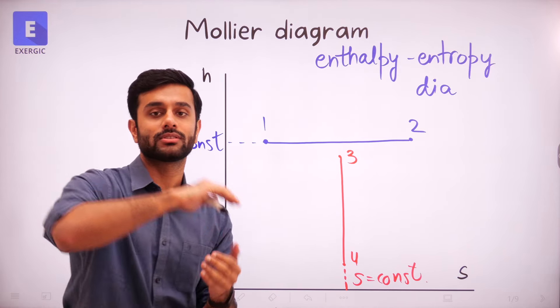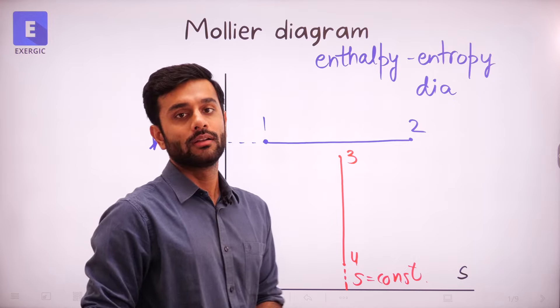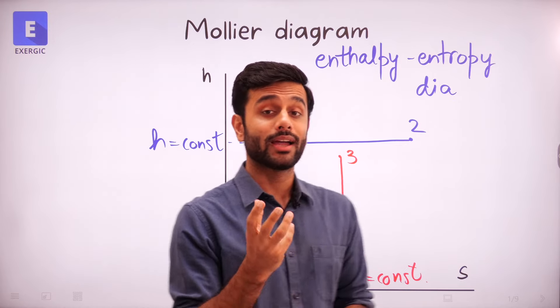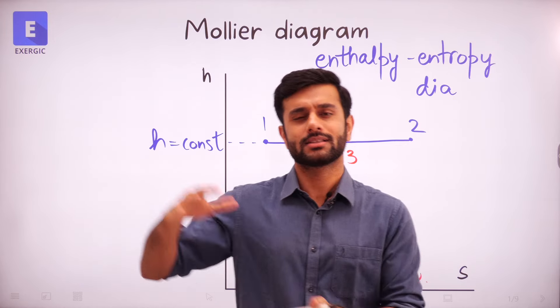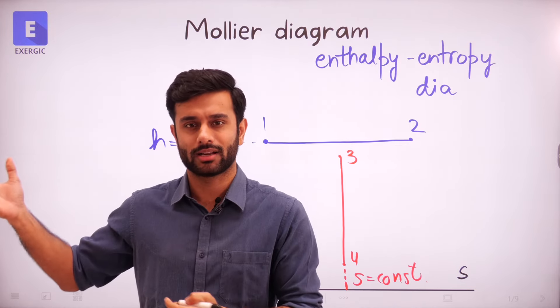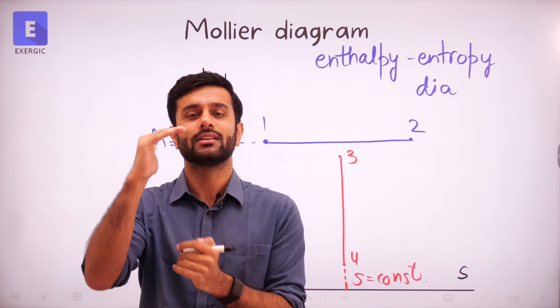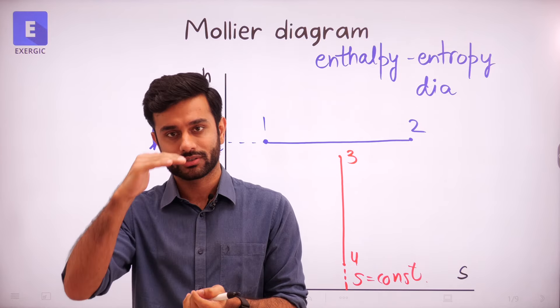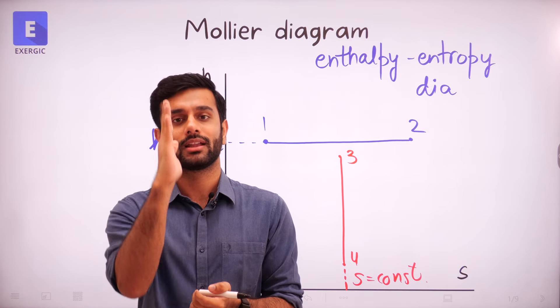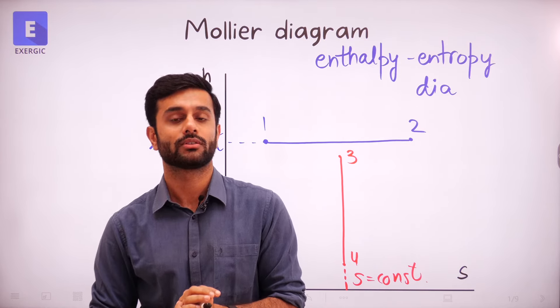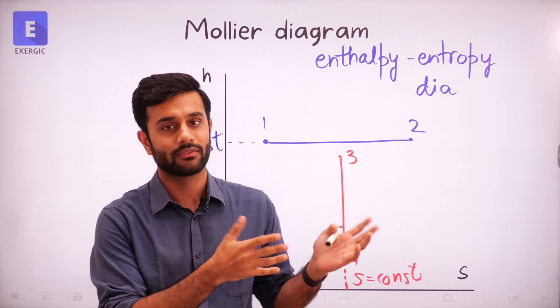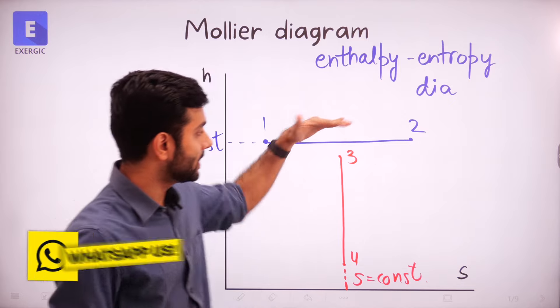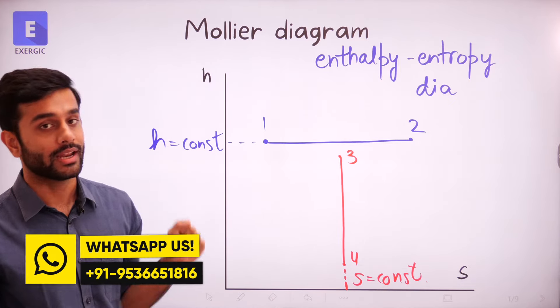The straight lines on this diagram also have significance just like previous diagrams. For PV, a straight horizontal line showed constant pressure and a vertical line showed constant volume. Similarly here, horizontal lines show constant enthalpy and vertical lines show constant entropy.